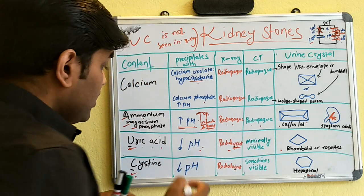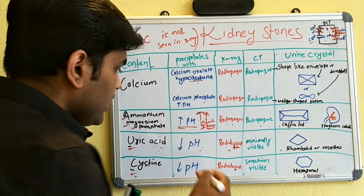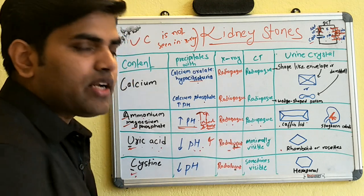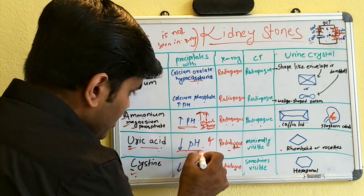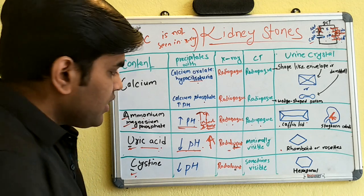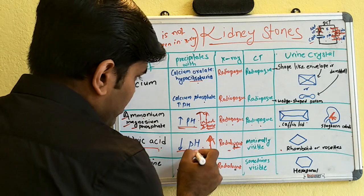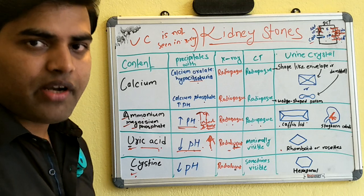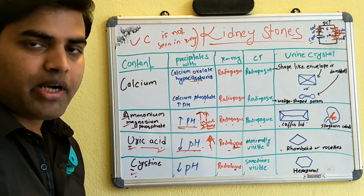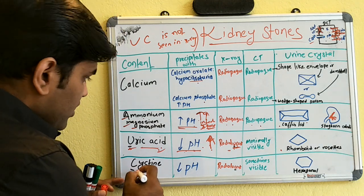On CT scan, uric acid stones are minimally visible. The urine crystal shape is rhomboid or rosette-like. Causes of uric acid stones include hyperuricemia (as in gout) and decreased urinary pH. Treatment includes alkalization of urine using sodium bicarbonate or acetazolamide, which prevents uric acid precipitation, plus anti-hyperuricemia medications like allopurinol.